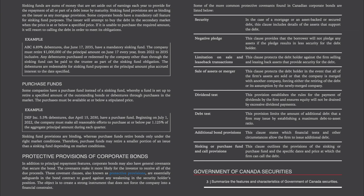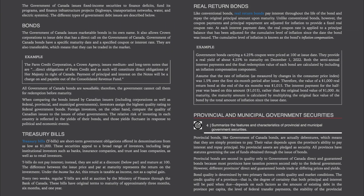Government of Canada Securities: the Government of Canada issues fixed income securities to finance deficits, fund programs, and finance infrastructure projects like highways, transportation networks, water, and electric systems. The Government of Canada issues marketable bonds in its own name, and also allows crown corporations to issue debt with a direct call on the Government of Canada. These bonds have a specific maturity date and a specified coupon or interest rate, and are transferable — they can be traded in the market. All Government of Canada bonds are non-callable; therefore, the Government cannot call them for redemption before maturity.